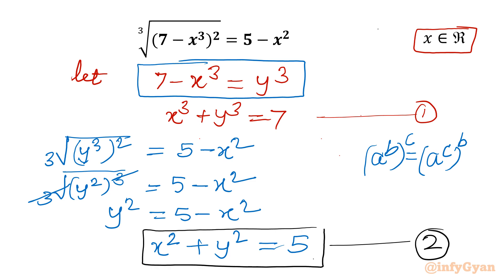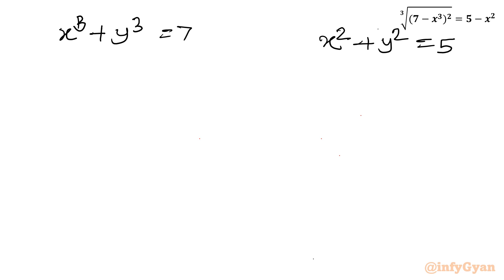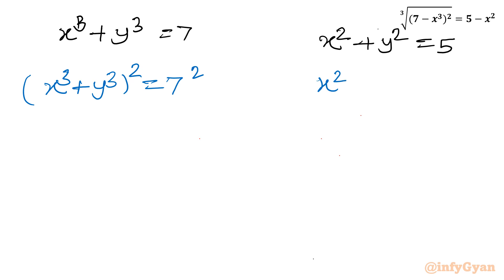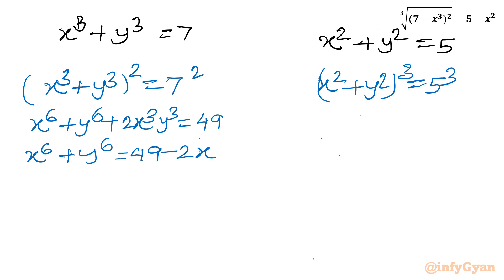So let us solve equation 1 and equation 2. Equation 1: x cubed plus y cubed equal to 7. Equation 2: x squared plus y squared equal to 5. I will square equation 1 and cube equation 2. Squaring equation 1: x to the 6 plus y to the 6 plus 2 times x cubed y cubed equal to 49. So x to the 6 plus y to the 6 equals 49 minus 2x cubed y cubed.